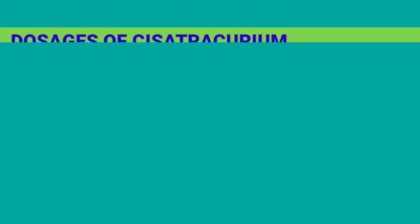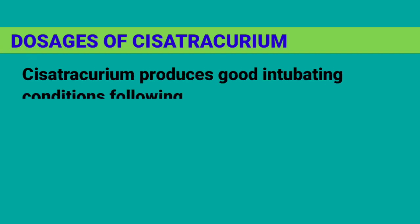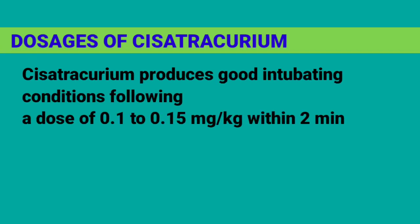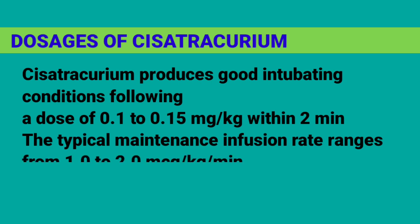Dosages of Cisatricurium: Cisatricurium produces good intubating conditions following a dose of 0.1 to 0.15 mg per kg within 2 minutes. The typical maintenance infusion rate ranges from 1.0 to 2.0 mcg per kg per minute.